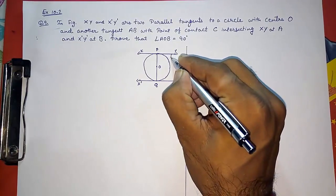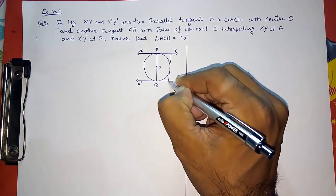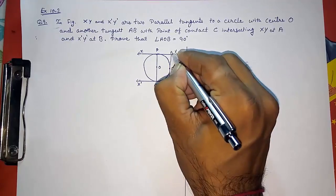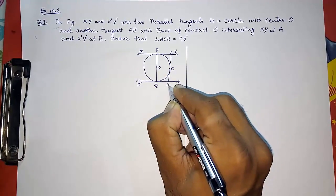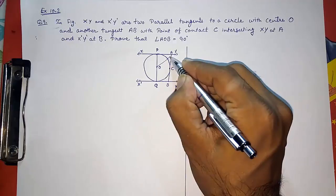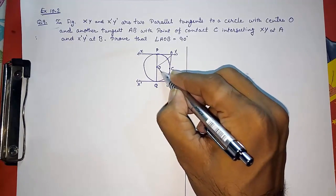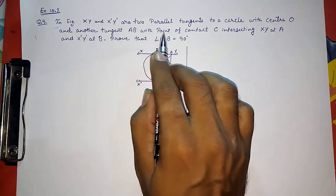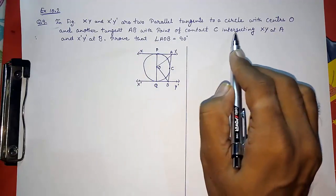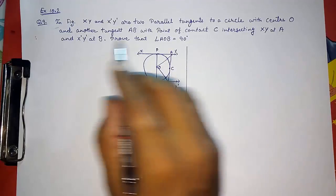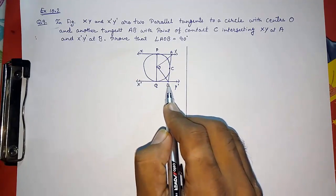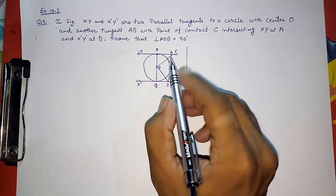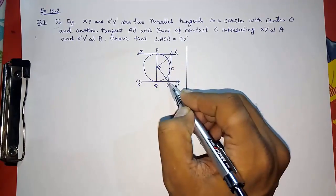We draw another tangent intersecting the circle at point C, naming the points A and B. The tangent AB with point of contact C intersects XY at A and X'Y' at B. We have to prove that angle AOB is equal to 90 degrees.